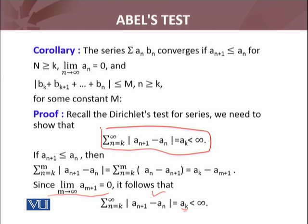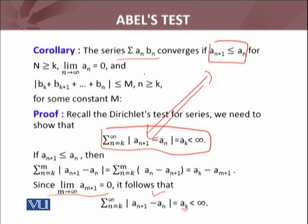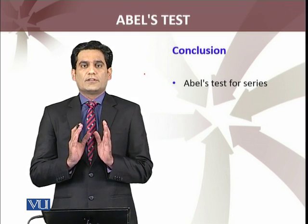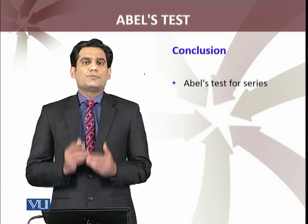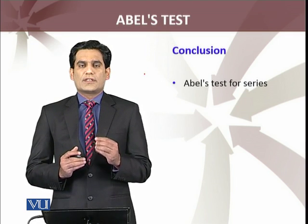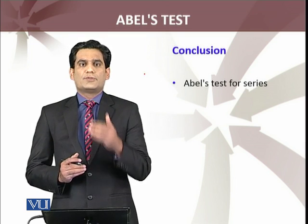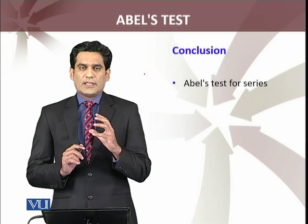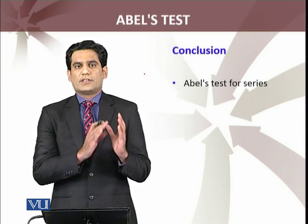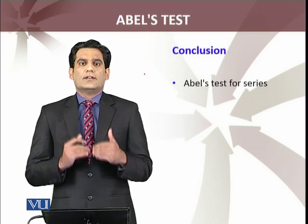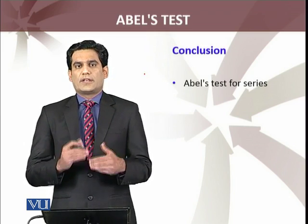Ab Dirichlet test jo hai wo main already proof kar chuka hoon. So if this condition is replaced by the new condition, applying Dirichlet test, we can conclude that the series summation A_n B_n convergent hai. Yahi aaj humne kiya hai — we have replaced a condition of the Dirichlet test by another condition which states that A_{n+1} ≤ A_n. Aur proof mein aapne dekha hoga ki humne yahi idea use kiya. Now we will apply Abel's test to an example.